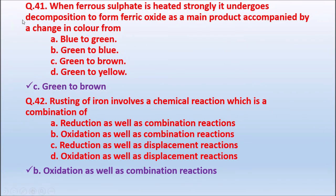Question 41: When ferrous sulphate is heated strongly, it undergoes decomposition to form ferric oxide as the main product. The color change is — blue to green; green to blue; green to brown; or green to yellow. When ferrous sulphate is strongly heated it decomposes to form ferric oxide and the color changes from green to brown. The correct answer is green to brown.